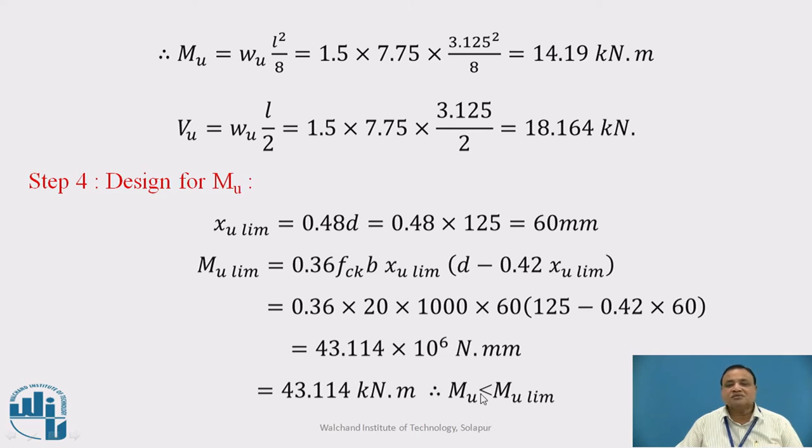You can also calculate M_u limit by using direct formula, a constant times f_ck b D squared. The constant value is 0.148 for mild steel, 0.138 for Fe415, and 0.133 for Fe500. If M_u is less than M_u limit, then it is under reinforced section.